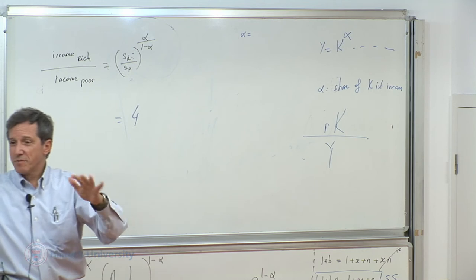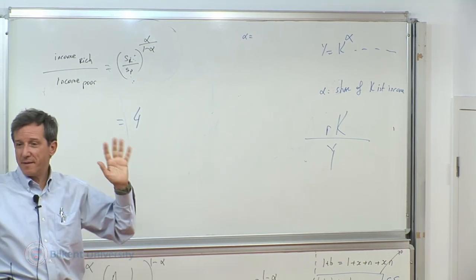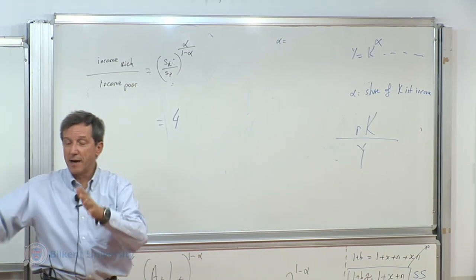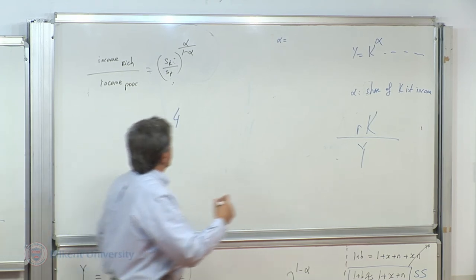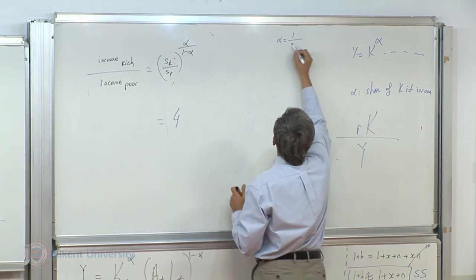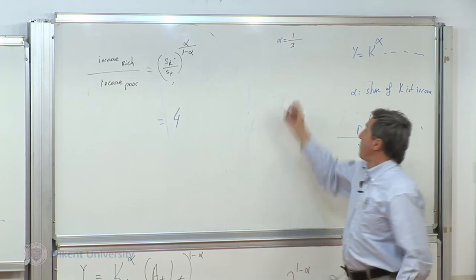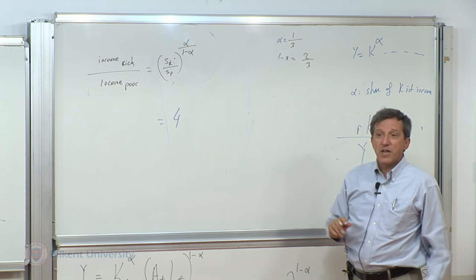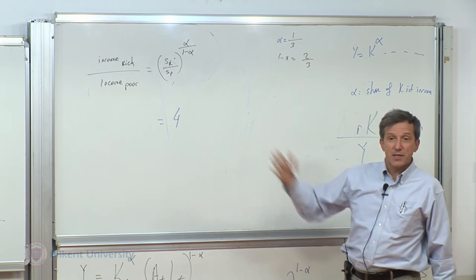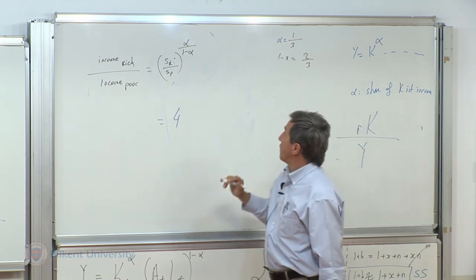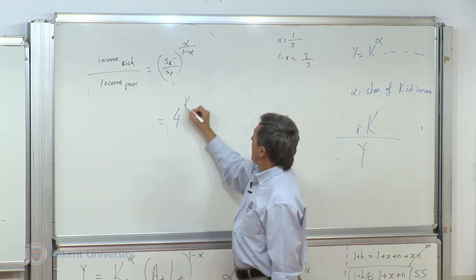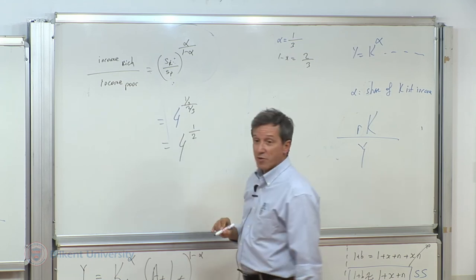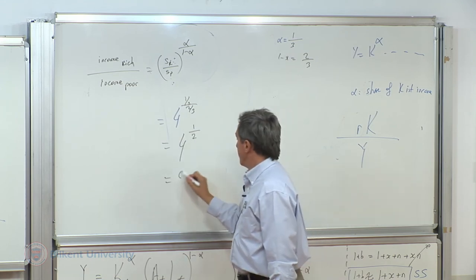I'm not going to get into details of this assumption. Just for the sake of the argument, okay, one-third capital income, two-thirds labor income. Just for my purpose, I am going to take alpha one-third. Therefore, one minus alpha is two-thirds. So if this is what data tells me, let's put in the numbers. Saving rates differ by four-folds. Alpha one-third divided by two-thirds. That is four to the power of half, which is two.